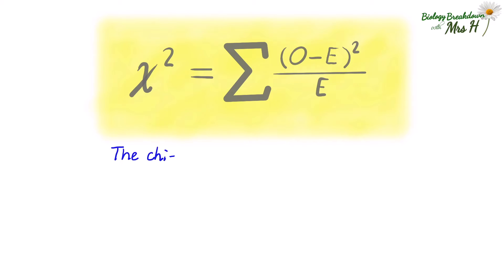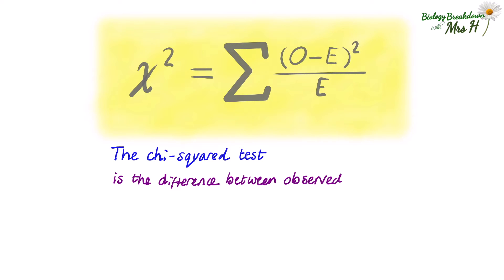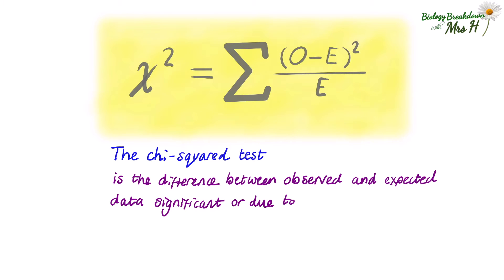The chi-squared test is used to see whether the difference between the observed and expected data is significant or due to chance. You don't have to remember the formula but you do need to know how to use it.